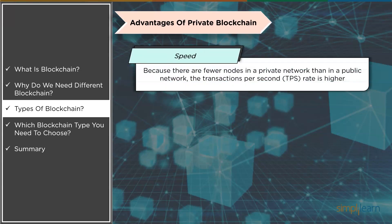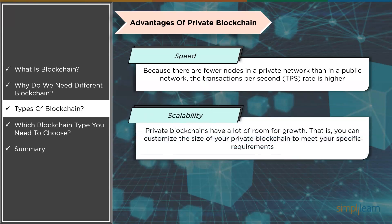Moving on to advantages of private blockchain — first is speed: private blockchain transactions are faster, meaning the transaction-per-second rate is higher. This is because a private network has a smaller number of nodes than a public network, so it takes less time for all nodes to agree on or verify a transaction. Second is scalability: private blockchains have a lot of room for growth — you can tailor the size of your private blockchain to meet your specific requirements. This makes private blockchains particularly scalable, allowing a company to easily increase or decrease the size of their network.